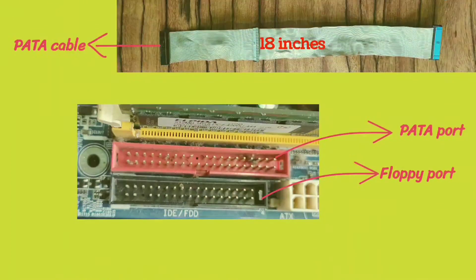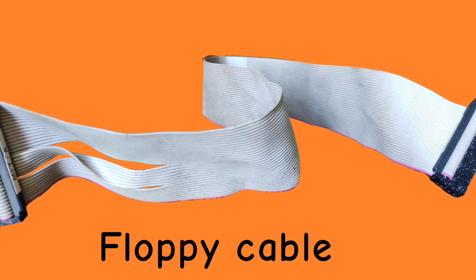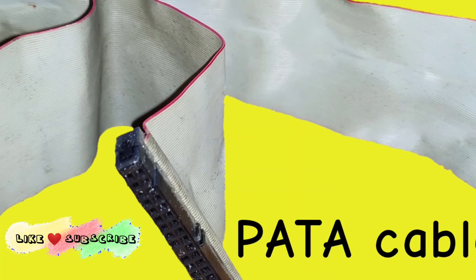Floppy cable has a twist at the end of the cable that attaches to the drive, but there is no twist in the PATA cable.